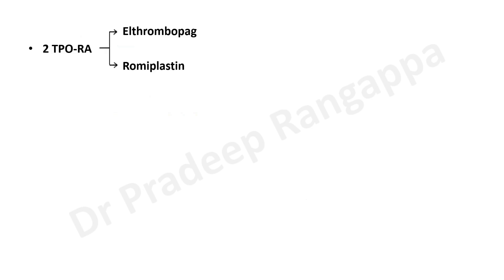There are currently two thrombopoietin receptor agonists available. You may have heard of eltrombopag, sometimes used by hematologists for immune thrombocytopenic purpura. There is also a subcutaneous formulation called romiplostim. Both drugs came around 2008 and there are a decent number of studies — around seven to eight — which I will talk about.